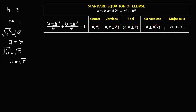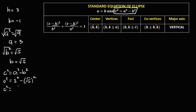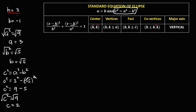To solve for c, use the formula c squared equals a squared minus b squared. Substituting: c squared equals 3 squared minus (square root of 5) squared, which is 9 minus 5, equals 4. Taking the square root, c equals 2. We now have all values: h, k, a, b, and c.